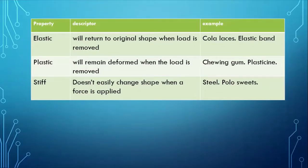So what is a stiff material? A stiff material is one which doesn't easily change shape when a force is applied. Steel, polo sweets, there are many others but bear in mind that steel and polo sweets have other properties, other descriptors as well. And of course what we're trying to do is get you more used to these particular descriptors and others.